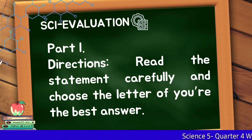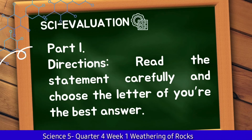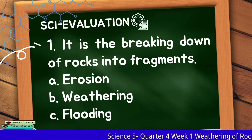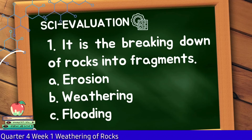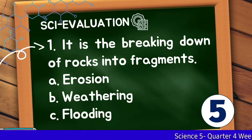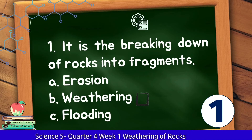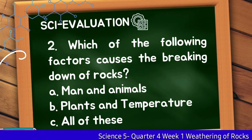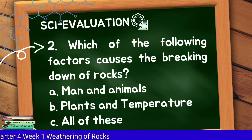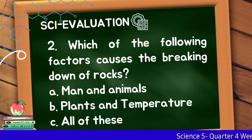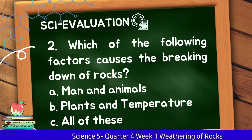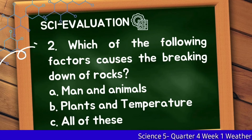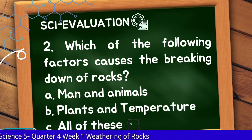Let us try another activity — Sci-Evaluation. Part 1 Directions: Read the statement carefully and choose the letter of the best answer. Number 1: It is the breaking down of rocks into fragments. Letter A: Erosion, Letter B: Weathering, Letter C: Flooding. The correct answer is Letter B, Weathering. Number 2: Which of the following factors causes the breaking down of rocks? Letter A: Man and Animals, Letter B: Plants and Temperature, Letter C: All of these. The correct answer is Letter C, All of these.